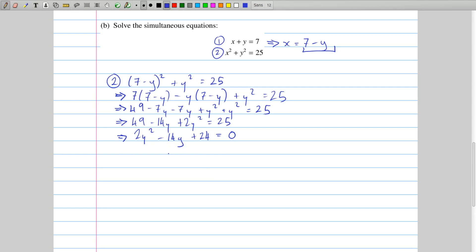Now notice that everything is a factor of two, so I'm actually just going to divide everything by two. So I get y squared minus 7y plus 12 equals zero. And you'll notice that this is a quadratic equation, and that's what you should end up with in this type of question when you have a linear equation and a circle equation, and you're trying to solve them simultaneously. You should end up with a quadratic, because that's how you get two answers out of this, and that's what you're meant to get.